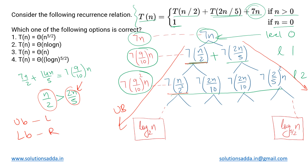Using both the upper bound and the lower bound, we will estimate the exact time complexity. For that we need the height of the leftmost and rightmost subtrees. In the leftmost subtree the problem is halved every time, so its height is log(n) to the base 2. On the right-hand side, the height of the tree is log(n) to the base 5/2. With both heights known, we can proceed to calculate the upper and lower bounds.